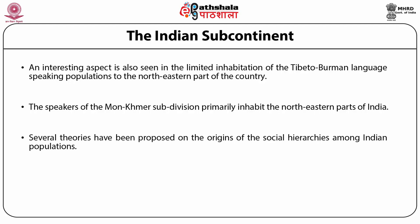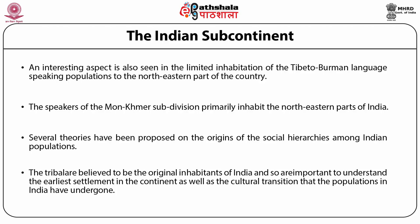Several theories have been proposed on the origin of social hierarchies among Indian populations. The first documented evidence of the caste system was found in the Rig Veda, dating from 1700 to 1100 BC. It has four groups — Brahman, Kshatriya, Vaishya and Shudra — each assigned a specific occupation. The origin of the caste system was hypothesized to result from Indo-Aryan invasions, wherein migrants pushed indigenous Dravidian groups toward the south. The indigenous groups were later recruited into the caste system. Tribal groups, believed to be the original inhabitants of India, are important for understanding the earliest settlement and cultural transitions.